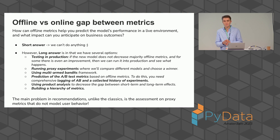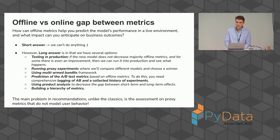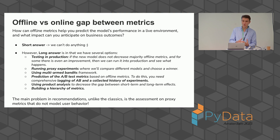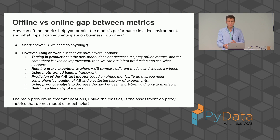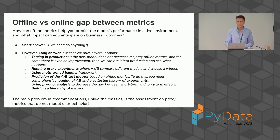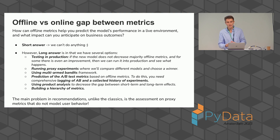Even after building a hierarchy of metrics and using both offline and online metrics, we still have a gap between online and offline metrics. The short answer for how to reduce this gap is: we can do nothing. But the long answer is that we have several options. First, we can test our systems in production — if the new model does not decrease majority offline metrics but our favorite offline metric increases, we can run in production and see what happens. We can also use proxy experiments like interleaving experiments, or multi-armed bandits. The secret key is that we can try to predict A/B test metrics based on offline metrics, or find correlations between offline and online metrics.